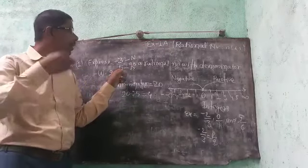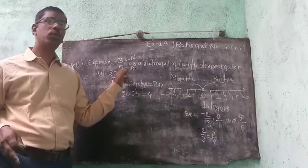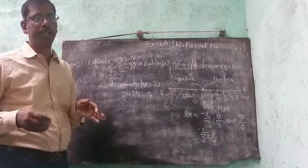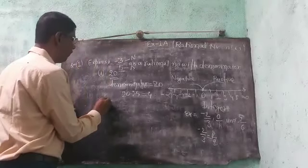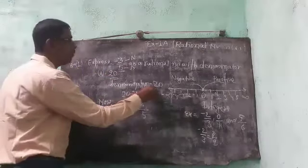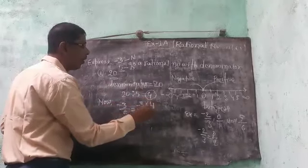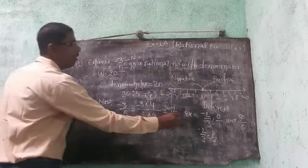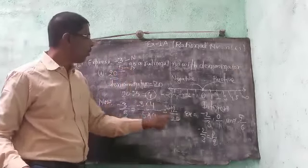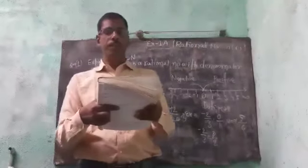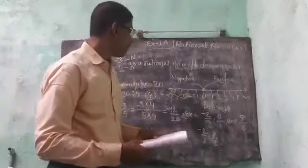We need to increase 5 to 20. To convert the denominator, when it increases, we use multiplication. So minus 3 by 5 equals minus 3 multiplied by 4 over 5 multiplied by 4, which equals minus 12 by 20. The denominator 5 has been converted to 20. This is how we solve question number 1. Now let's move to the second question.